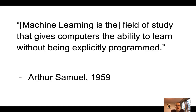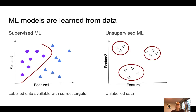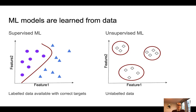Depending on the type of data machine learning models are learned from, we differentiate between supervised and unsupervised machine learning models. In supervised machine learning, models are learned from data where we have the correct targets of each sample available — so the data itself is labeled. In unsupervised machine learning, the data remains unlabeled, so we do not know which class a sample belongs to. You actually encountered unsupervised machine learning models in this workshop when you employed principal component analysis and principal coordinates analysis. For this section, we will focus on supervised machine learning.